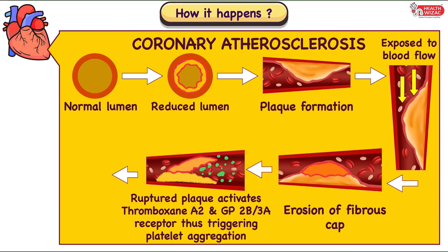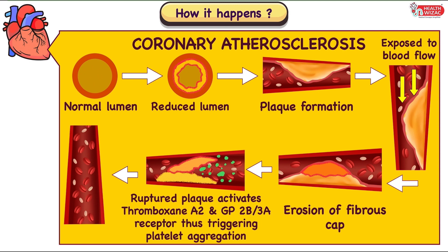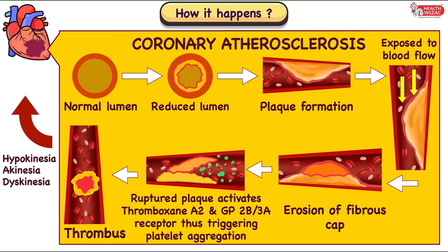As the plaque is ruptured, thromboxane A2 is released along with conformational changes in glycoprotein 2b3a receptor, and thus platelets start aggregating and coagulation occurs leading to thrombus formation. This thrombus gets dislodged and gets stuck in the coronary arteries, where the site and extent of thrombosis may result in either hypokinesia, akinesia, or even dyskinesia of the regional area of the heart, thus hampering cardiac contractility.